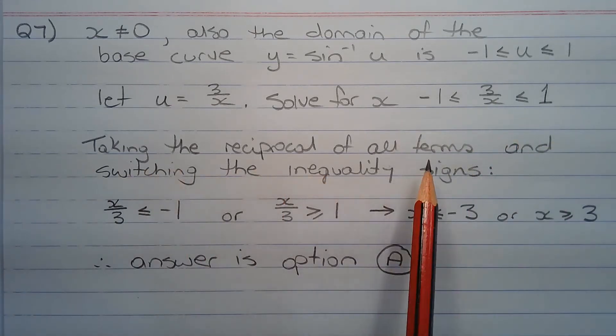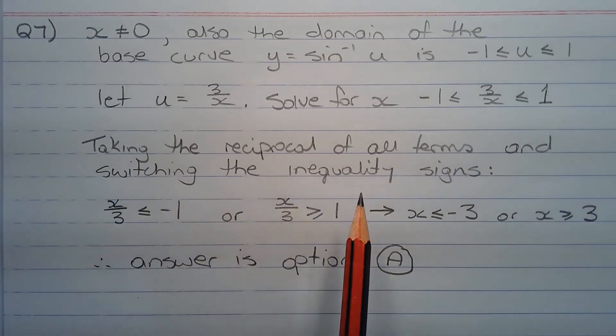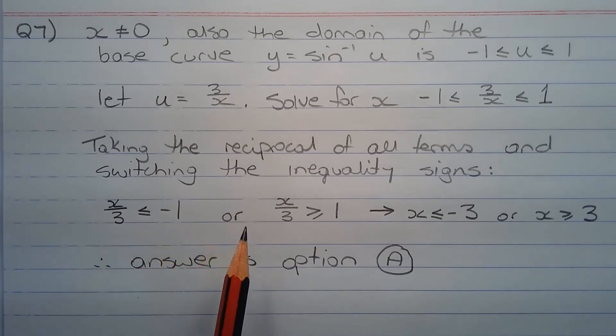Taking the reciprocal of all terms and switching the inequality signs around, we get x over 3 is less than or equal to negative 1 or x over 3 is greater than or equal to 1.